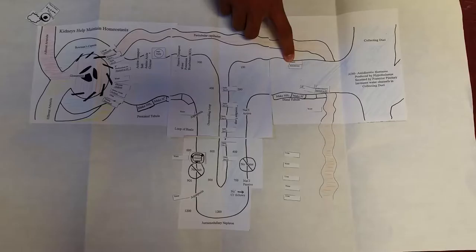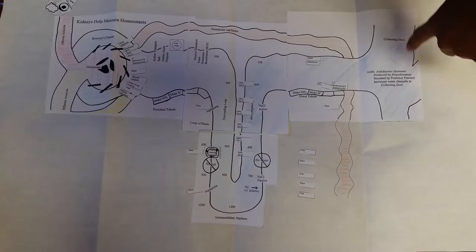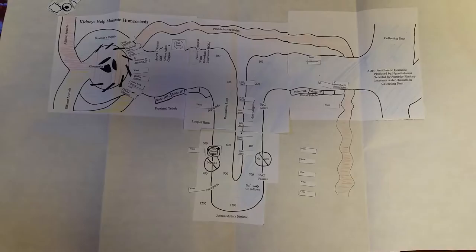After reabsorption and secretion in the distal tubule, the filtrate finally travels to the collecting ducts where the last small amount of secretion and reabsorption occur. After that, excretion of urea and excess water occurs.